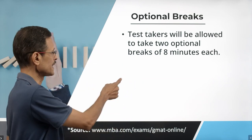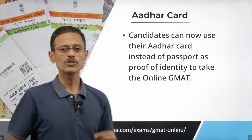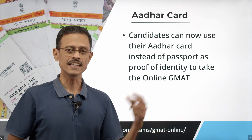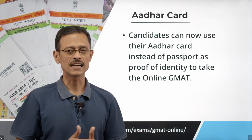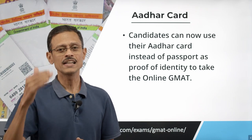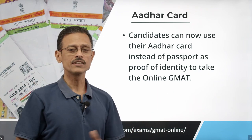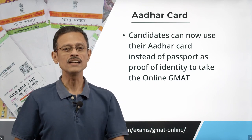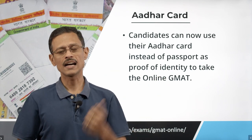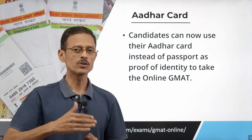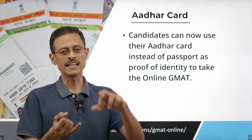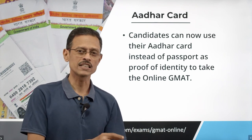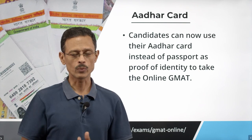The fifth change is particularly relevant for Indian test takers. Until now, you needed a passport to take the GMAT online version. Starting April 8th, you can use your Aadhaar card as a substitute — not a secondary option, but a full substitute for the passport as proof of identity. Your Aadhaar card must be linked to a mobile number, which is essential, so you can use the Aadhaar card and mobile OTP as proof of identity. So if you don't have a passport or it has expired, you can use your Aadhaar card.